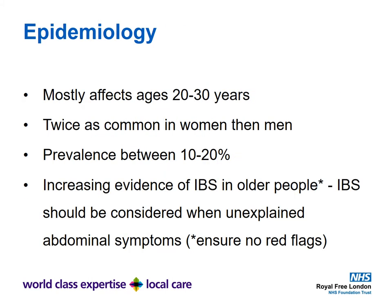Looking at the epidemiology, IBS mostly affects ages between 20 and 30, is twice as common in women than men, and the prevalence is about 10 to 20 percent in the United Kingdom. There is increasing evidence of IBS in older people, but this must be balanced by the possibility of red flag symptoms. In younger people without a strong genetic history of colonic cancers or hereditary polyposis, you can usually reach a diagnosis of IBS more easily.